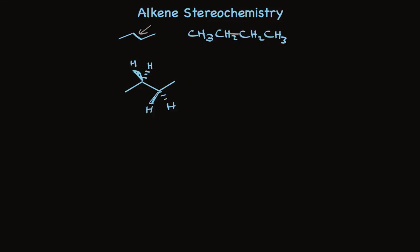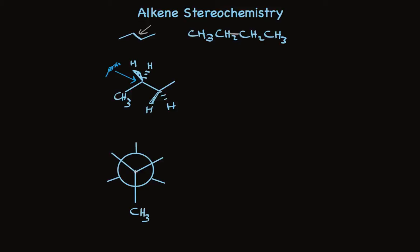However, Newman projections make the spatial relationships even easier to see. The circle represents two carbons, and the lines that go to the middle of the circle represent substituents attached to the carbon nearest us. To use the Newman projection, we need to sight along a carbon-carbon bond. So I've positioned our eye so we can look along the C2-C3 bond. When we do that, the carbon closest to our eye has a methyl group sticking straight down — and to our eye it looks like it's sticking down. The lines that go to the center of the circle represent things attached to the carbon closest to our eye. The other two things are hydrogens, one up and to the right, and one up and to the left.